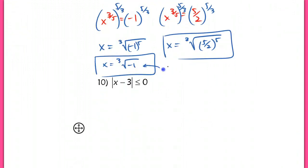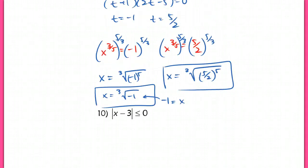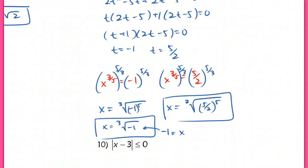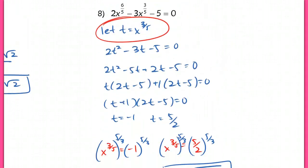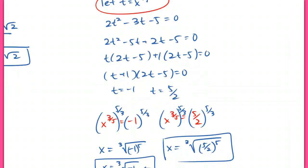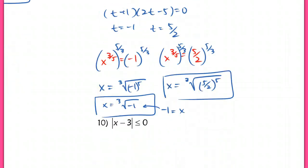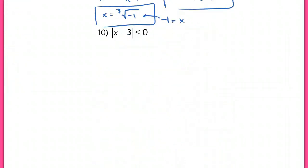Cube root of negative 1 is just negative 1, so those are your two solutions. We don't need to check either of those — we didn't introduce an extraneous solution, so they should both work.